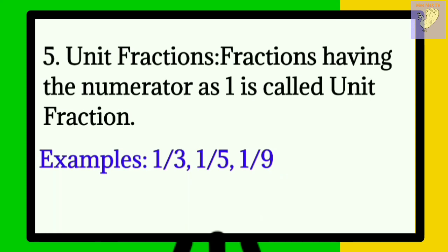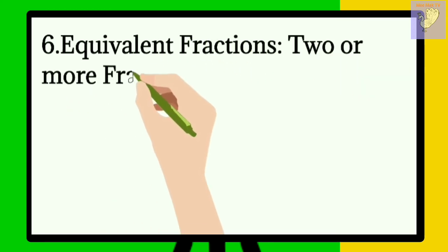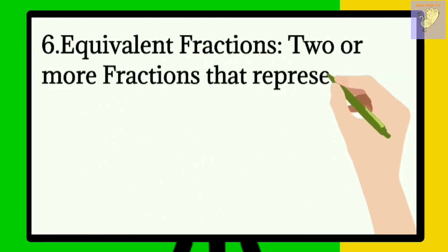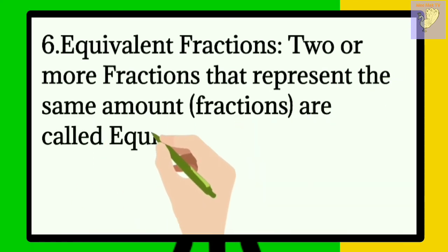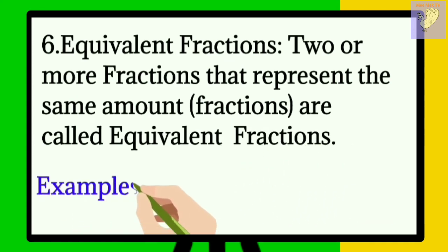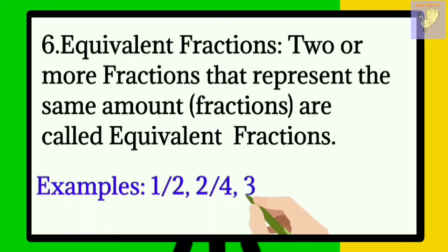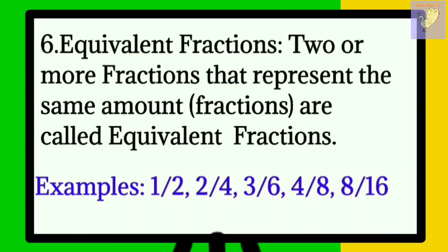Now let's move on to the sixth type of fraction, which is equivalent fraction. Two or more fractions that represent the same amount are called equivalent fractions. For example: 1 upon 2, 2 upon 4, 3 upon 6, 4 upon 8, and 8 upon 16 — when we cancel all of them, we get 1 upon 2. Therefore they are equivalent fractions.